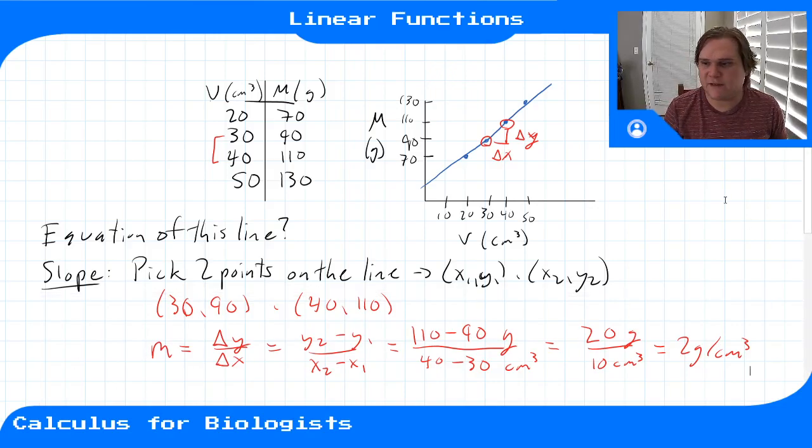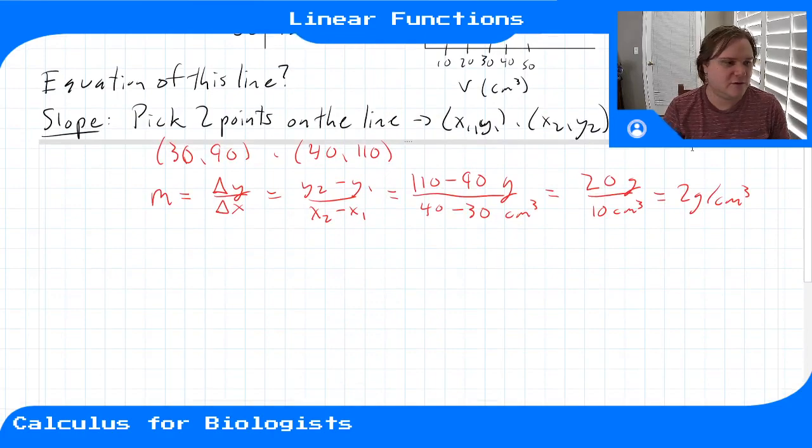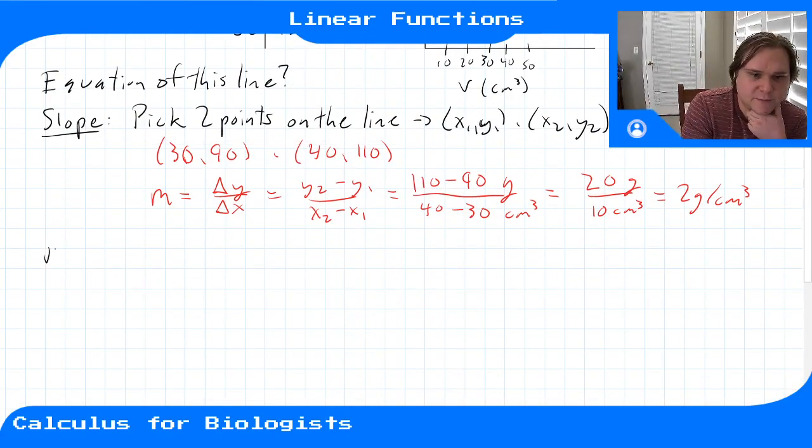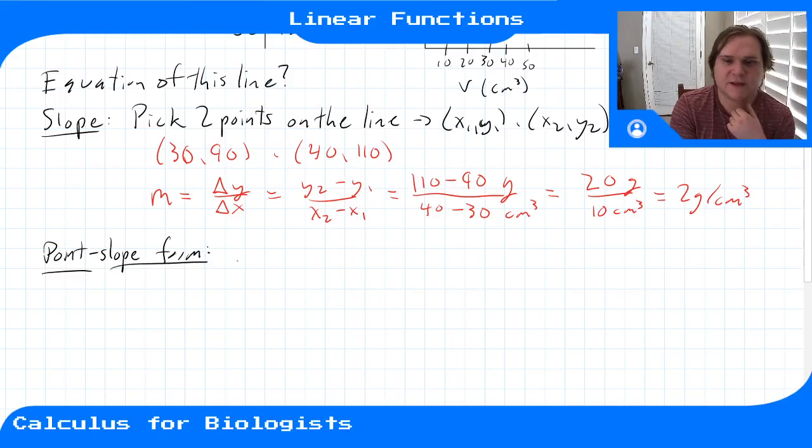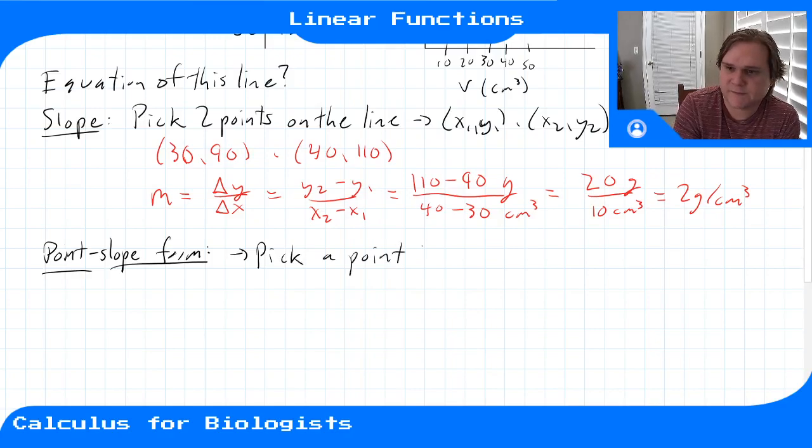So then to get the equation of the line, we can either start with point-slope form. Point-slope form, since we have lots of points, and we don't know what the intercept is. So that one, we are just gonna pick a single point, now that we have the slope. So let's pick x1, y1.